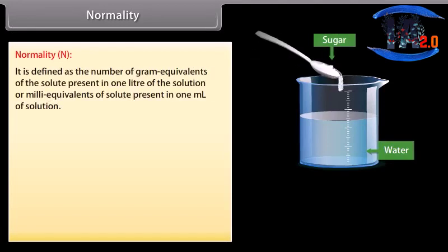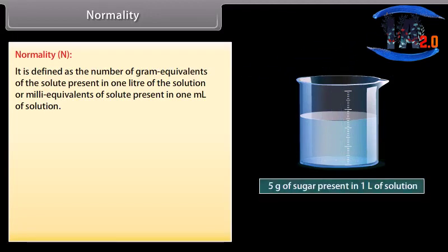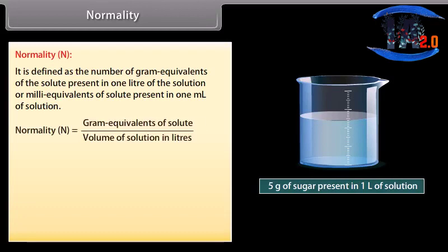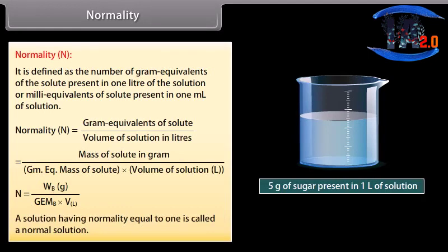Normality is defined as the number of gram equivalents of the solute present in one liter of the solution, or milliequivalents of solute present in one milliliter of solution. It is represented by N. Mathematically, normality N is equal to W_B in grams divided by the product of gram equivalent mass of B and volume of solution in liters. A solution having normality equal to one is called a normal solution.